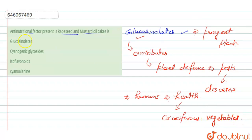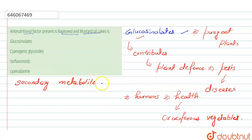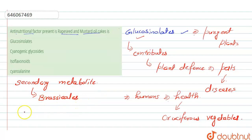Glucosinolates occur as secondary metabolites. They are present in almost all plants of the order Brassicales, but are also present in the genus Drabopsis.